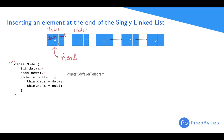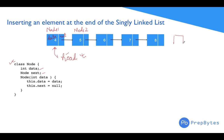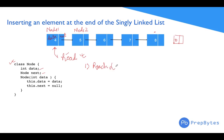The linked list exists somewhere in memory, and the head variable is the one that keeps track of the first node. Anytime we need to work with the list, we have the head variable. Now, to insert a node at the end — let's say I want to store 10 — the first task is to reach the end node, or the last node.